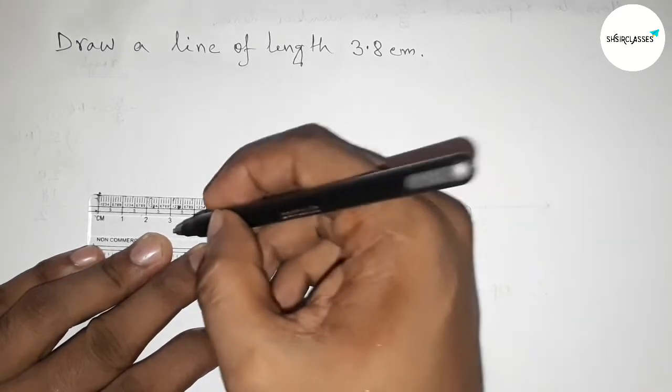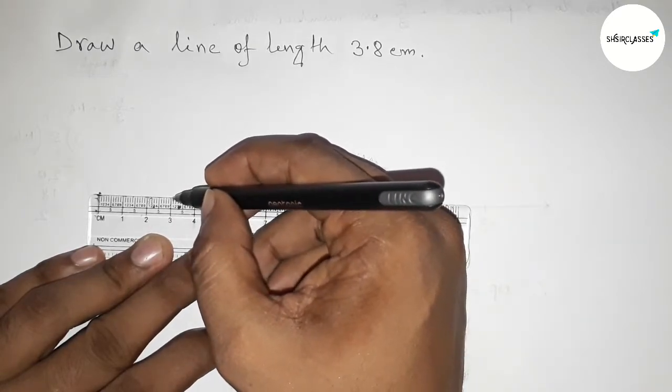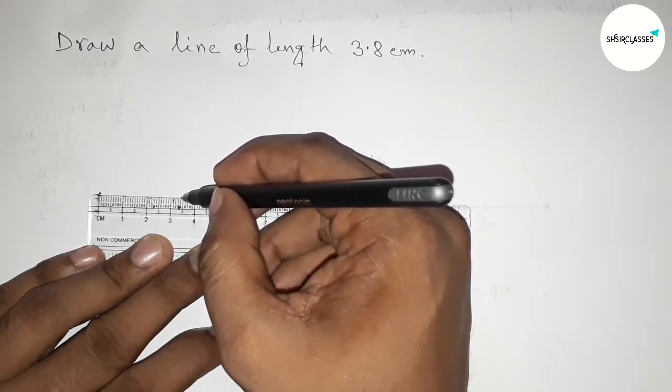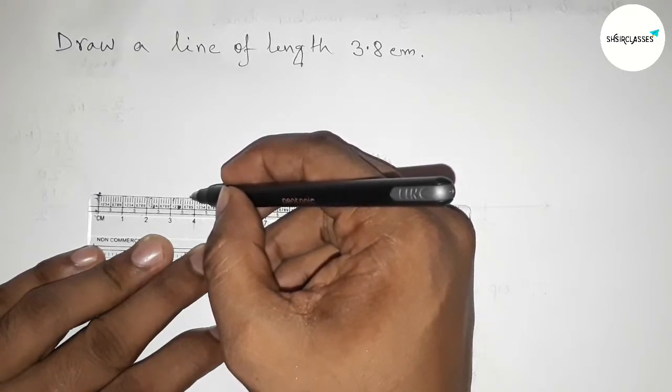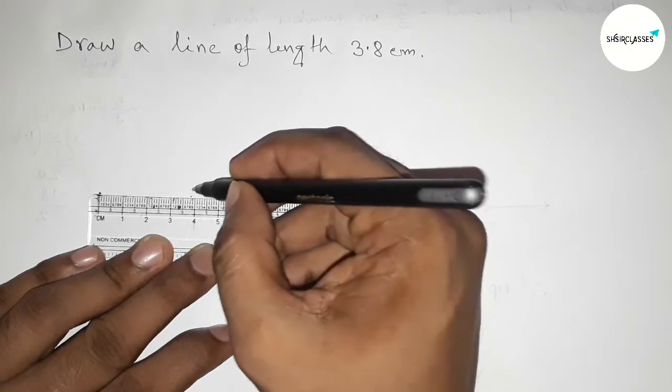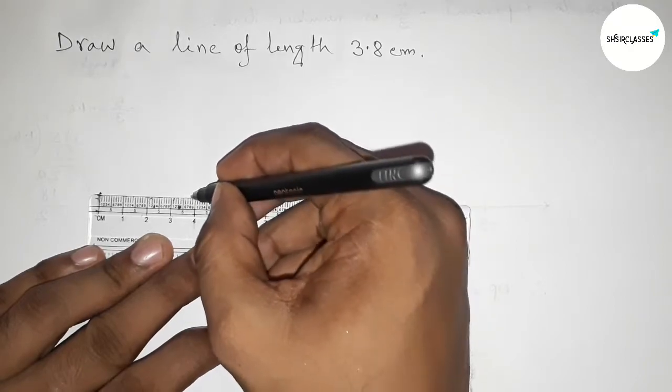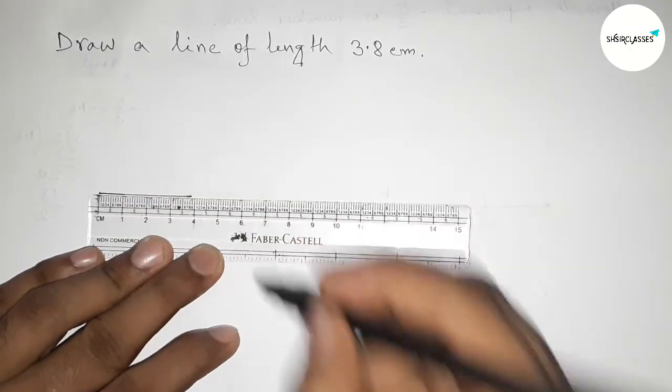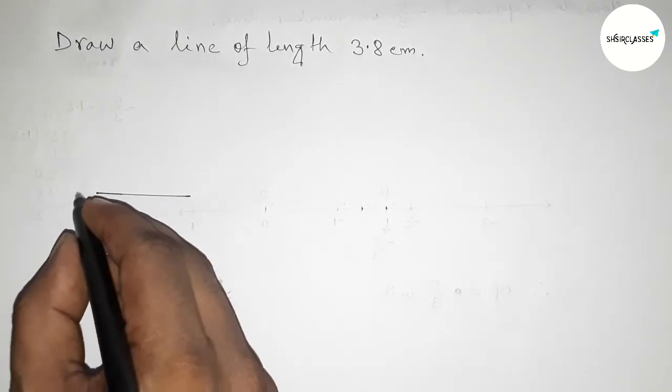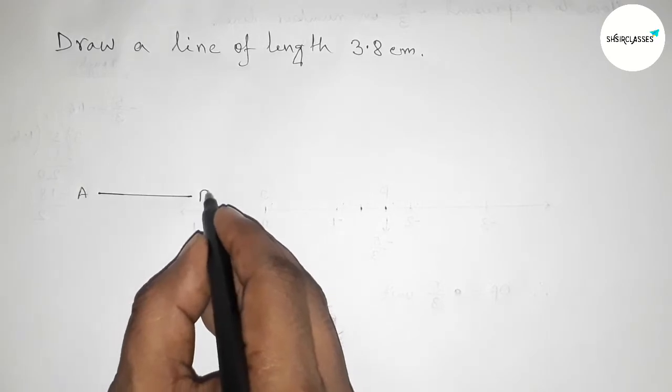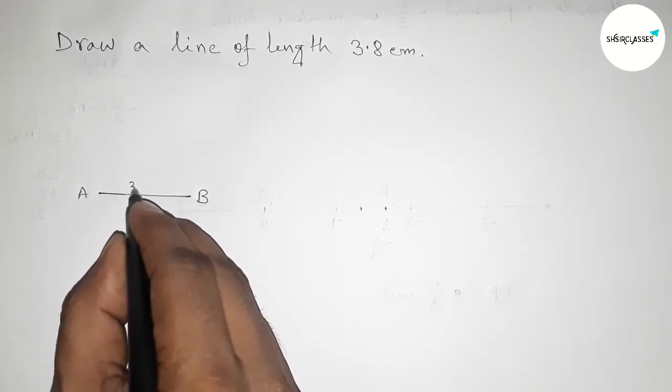Now counting 3.8, so this is 3, 3.1, 2, 3, 4, 5, 6, 7, 8. So this is 3.8 centimeter. So first marking this and joining this line, okay? So taking point here A and here B.